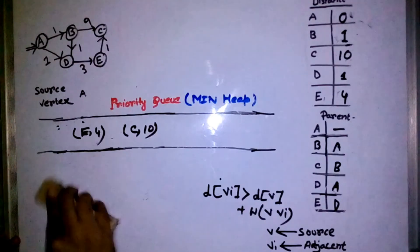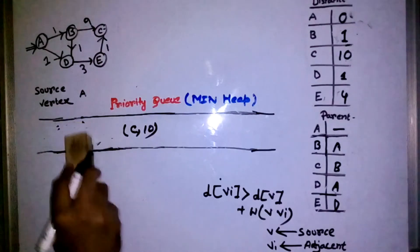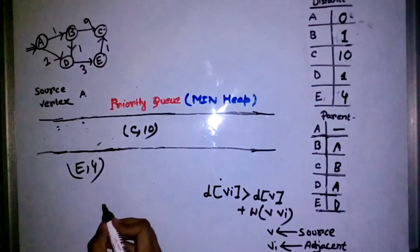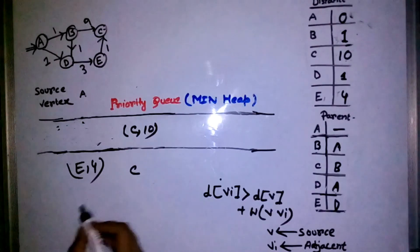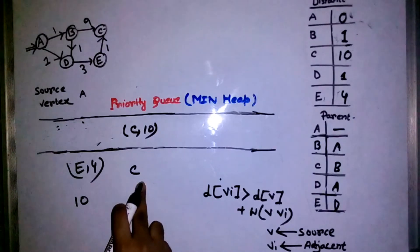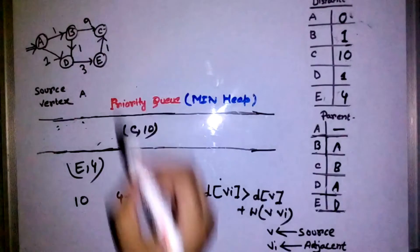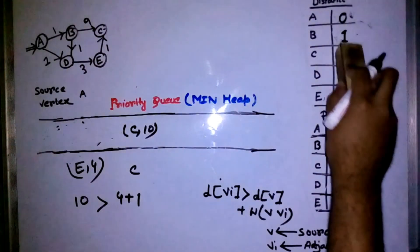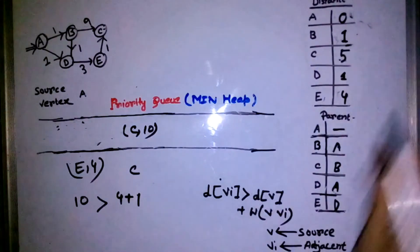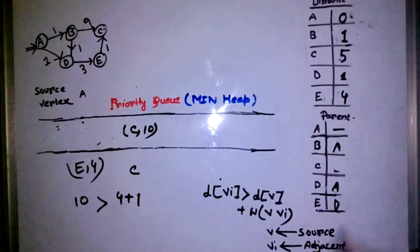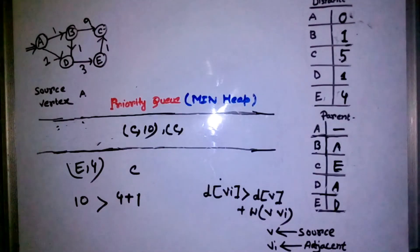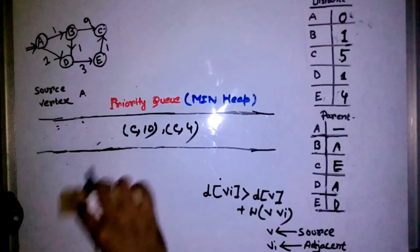The queue is not empty, so I extract the minimum and get E. The only adjacent vertex of E is C. Distance to reach C is ten, and distance of E is four plus weight of edge E–C which is one, giving five. Ten is greater than five, so I update: distance of C becomes five, and parent of C is now E. I enqueue C with priority five.